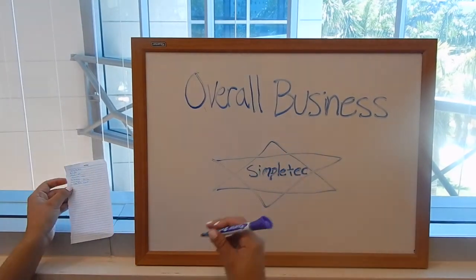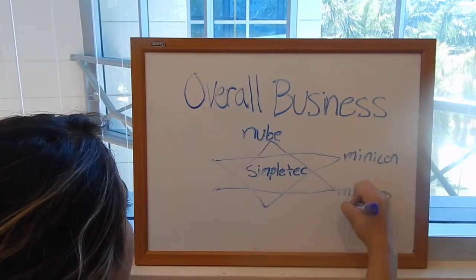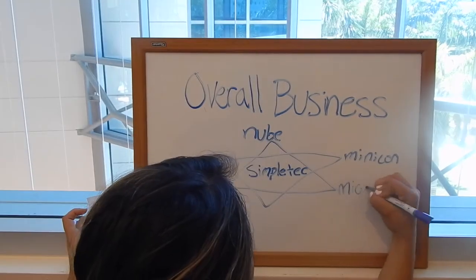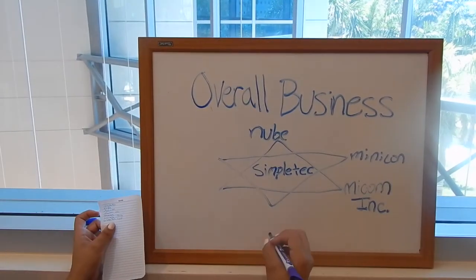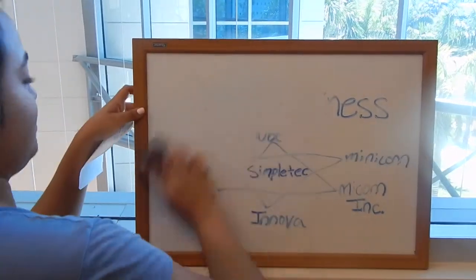We learned how to target our segments correctly. With our company, SimpleTech, we started with Noob, then moved on to Minicom, Micom Inc., Innova, Infinite Tech, Globetek 4.